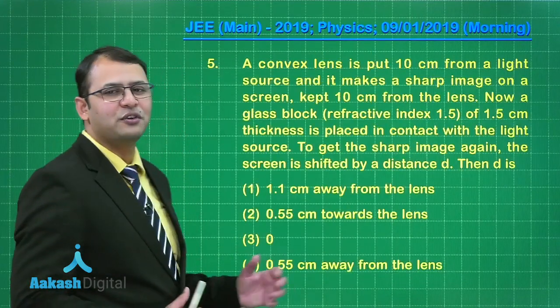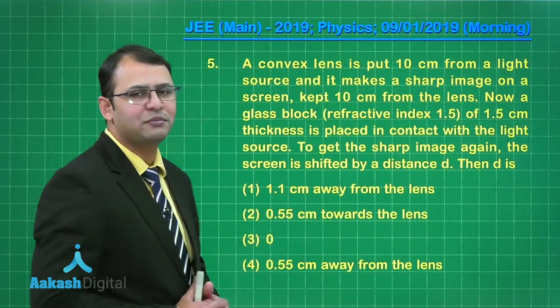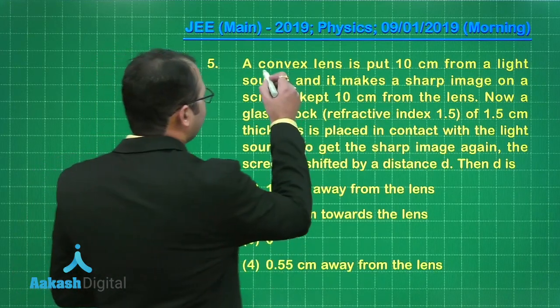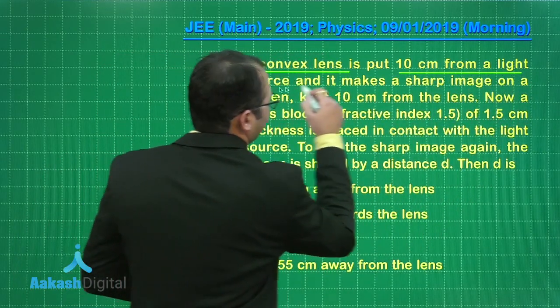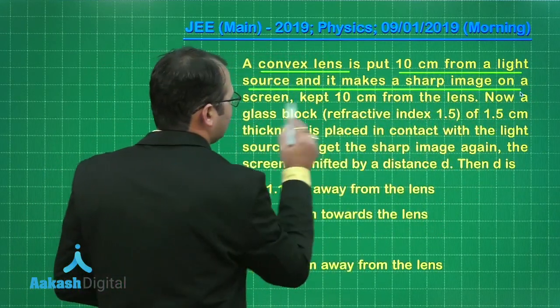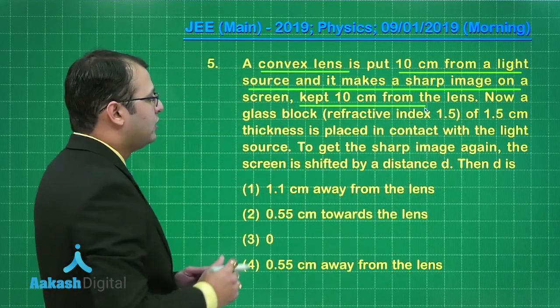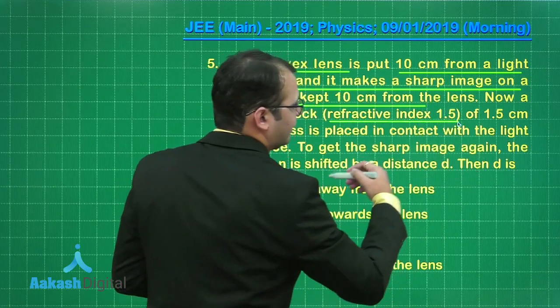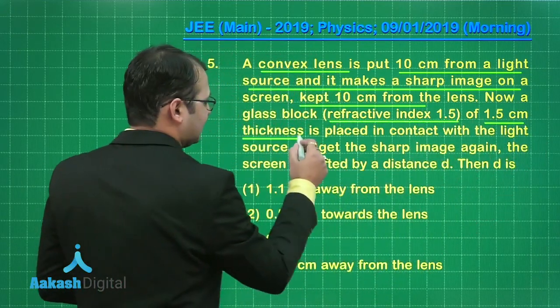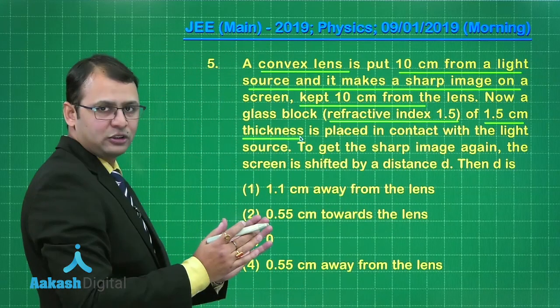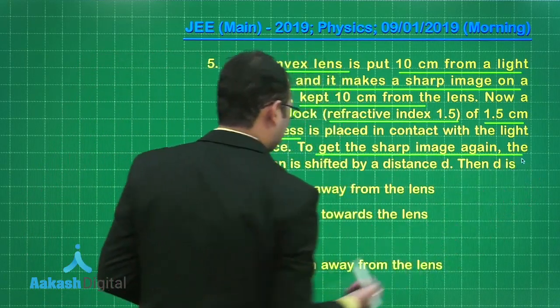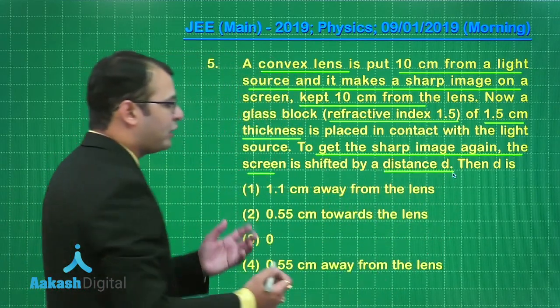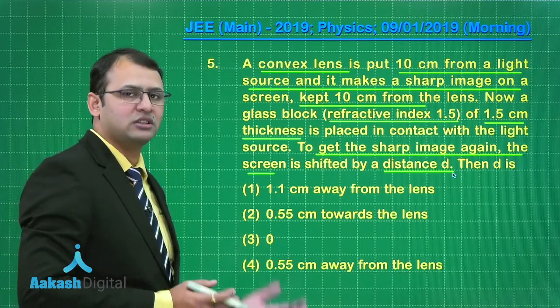So in this question, there is a convex lens that means this belongs to segment of optics. Let's see what the question says. There's a convex lens which has been placed 10 centimeter from a light source and it makes a sharp image on screen at 10 centimeter on the other side. Now the glass slab of refractive index 1.5 of 1.5 centimeter thickness is placed in contact with the light source. Now to get the sharp image again, the screen has to be shifted by distance d. We want to find where has to be shifted and by what distance.